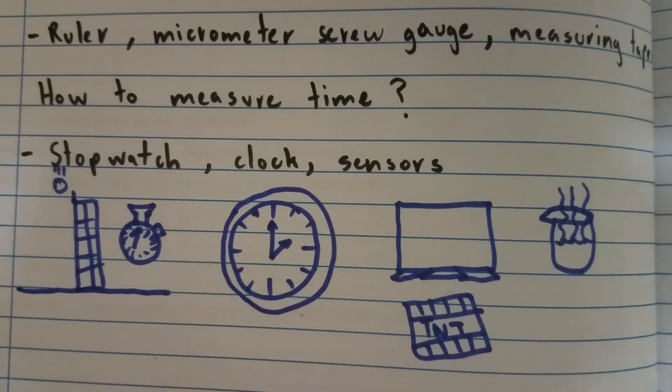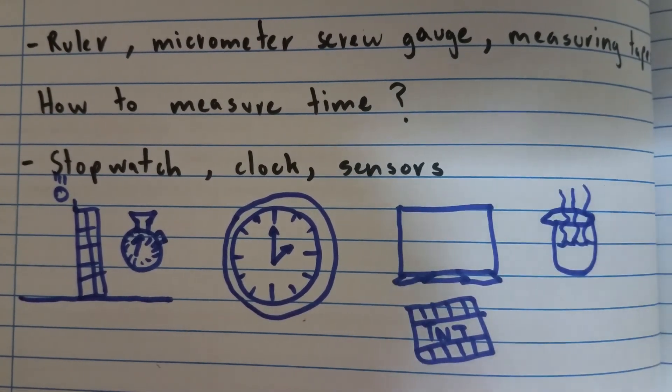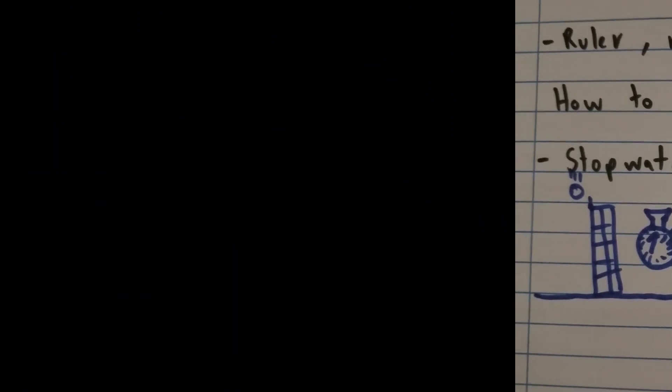So this is it for 1.1 general physics, length and time. I'll see you in the next video with 1.2 which is about motion. Thanks for watching.